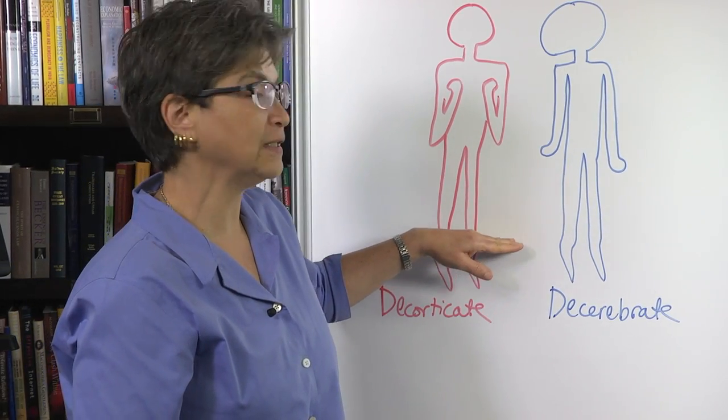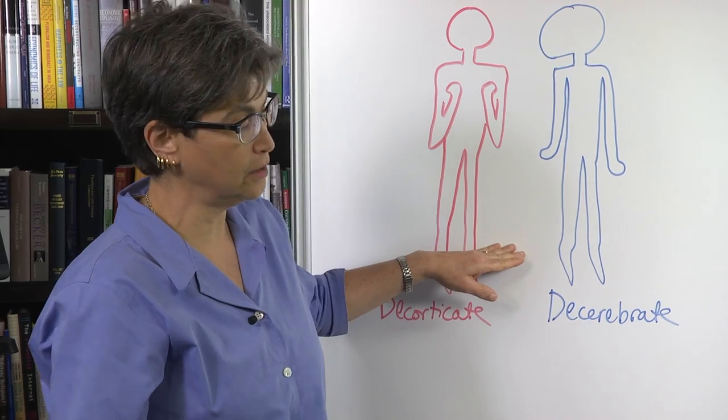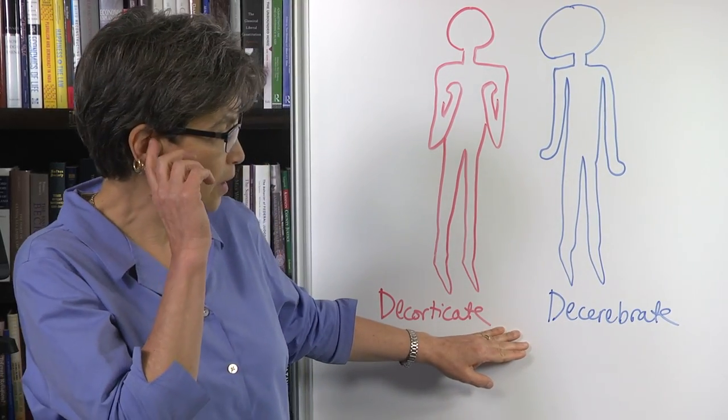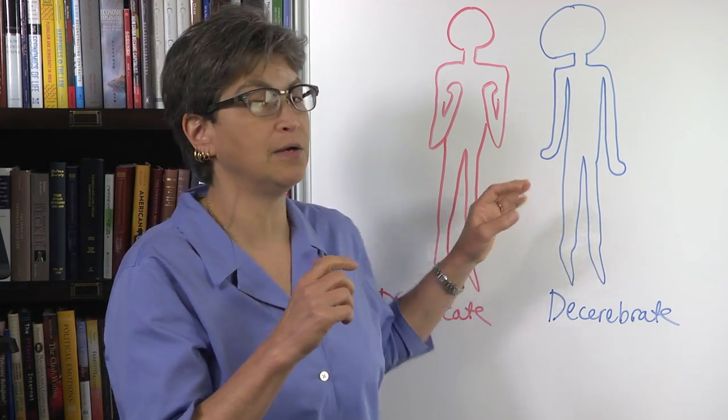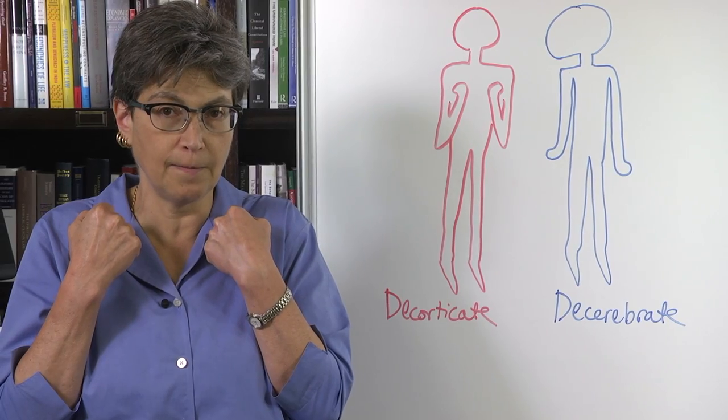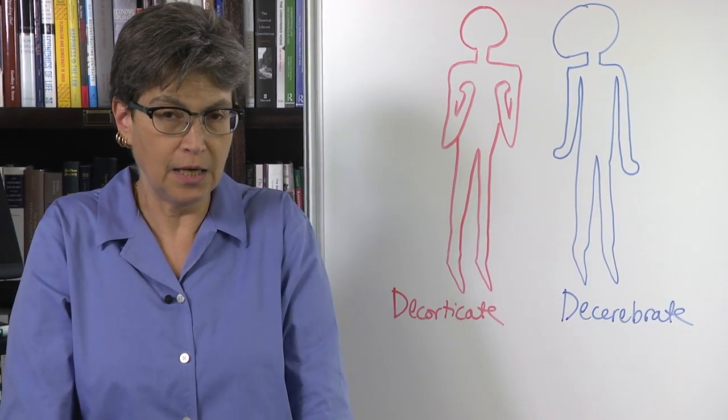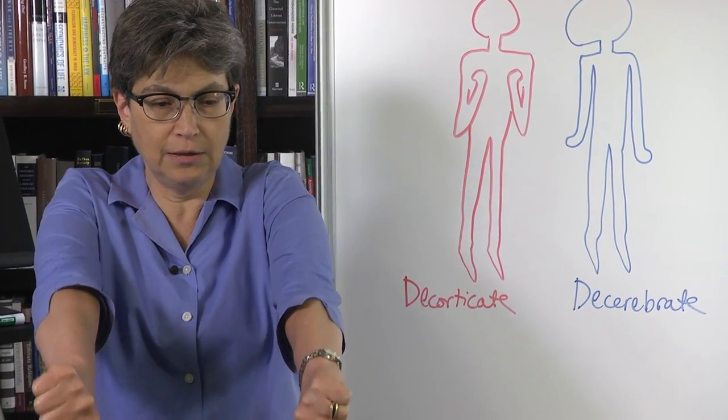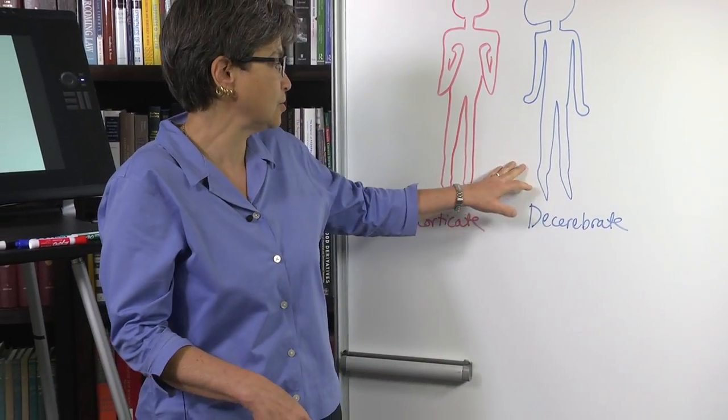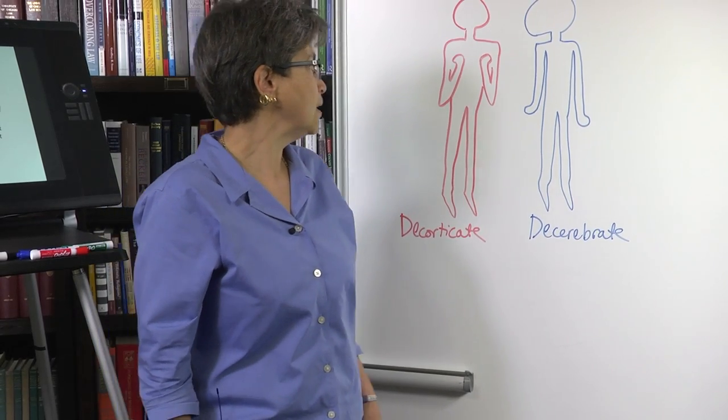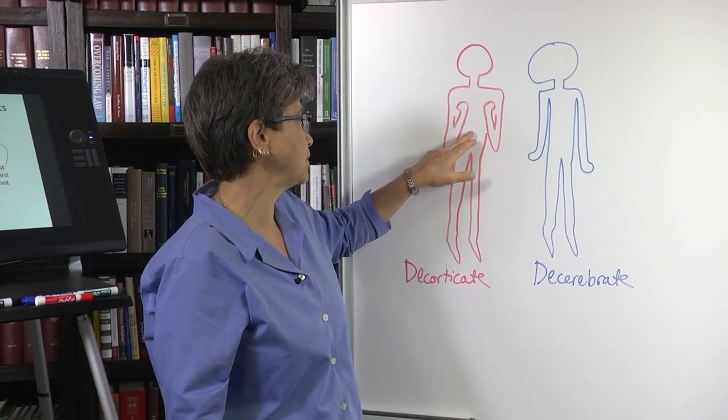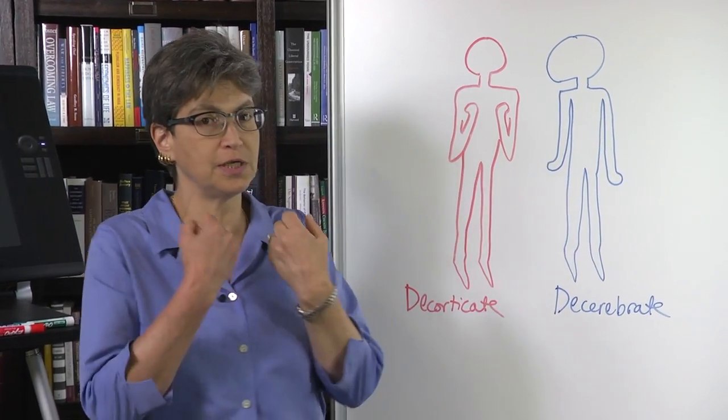And then if the lesion is farther caudal, the posture becomes what's called a decerebrate. And the decerebrate posture is this. So the arms are out and supinated. And again, the legs are extended. So this is a physiological extensor. This is physiological extensors.